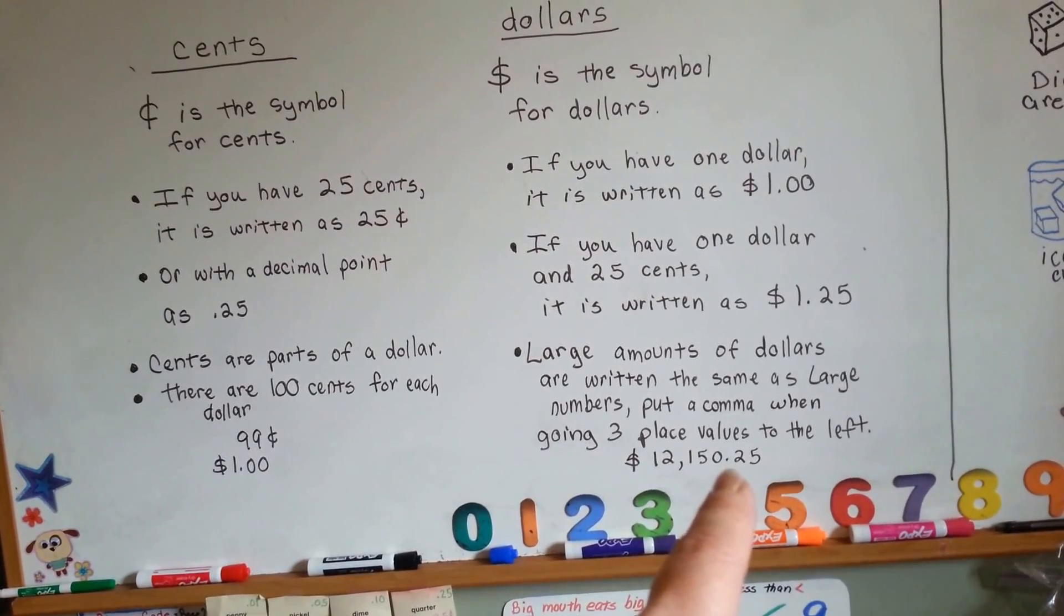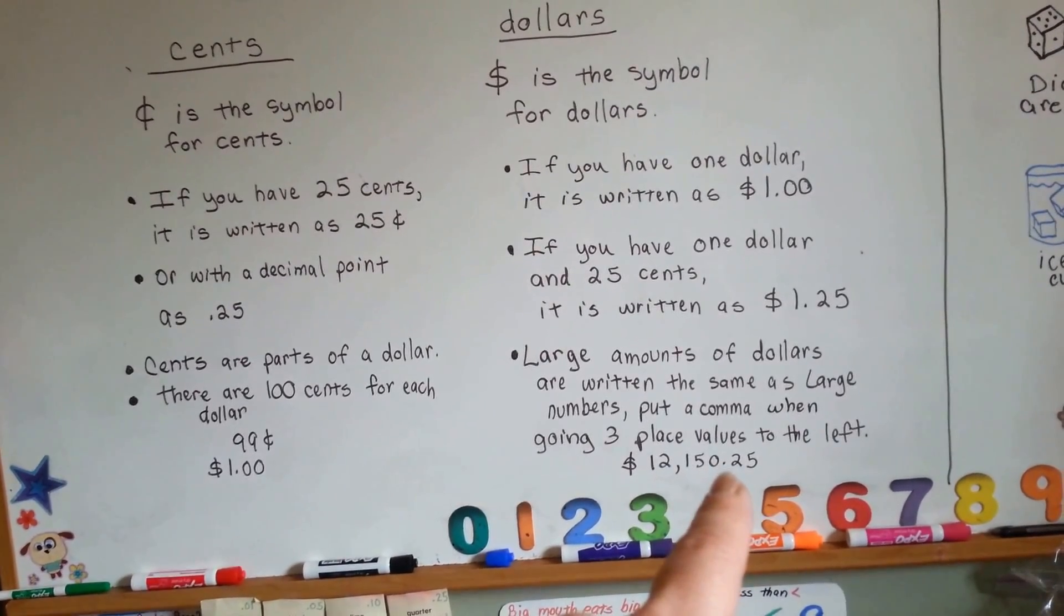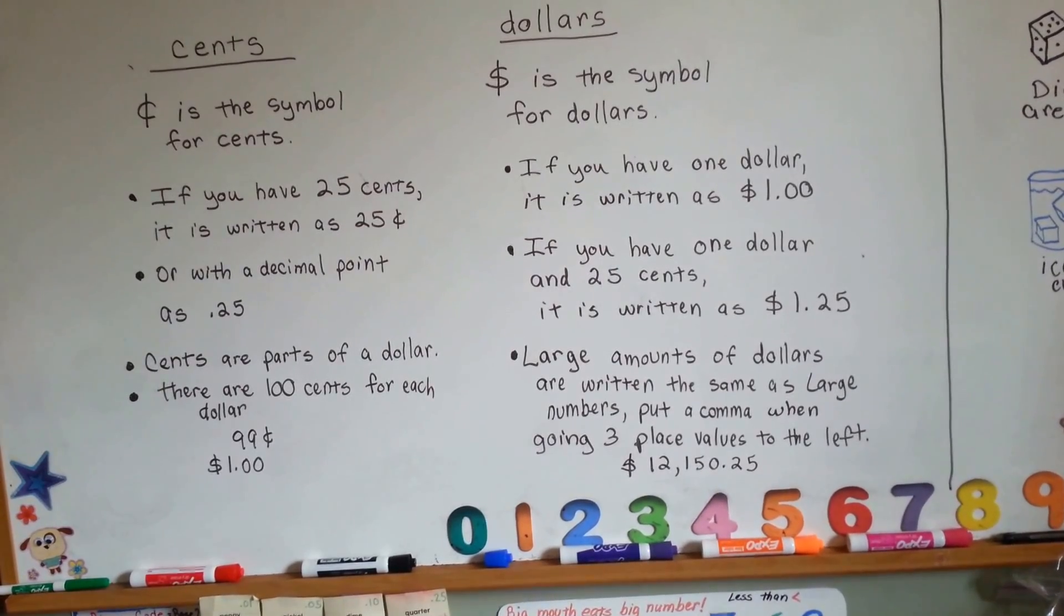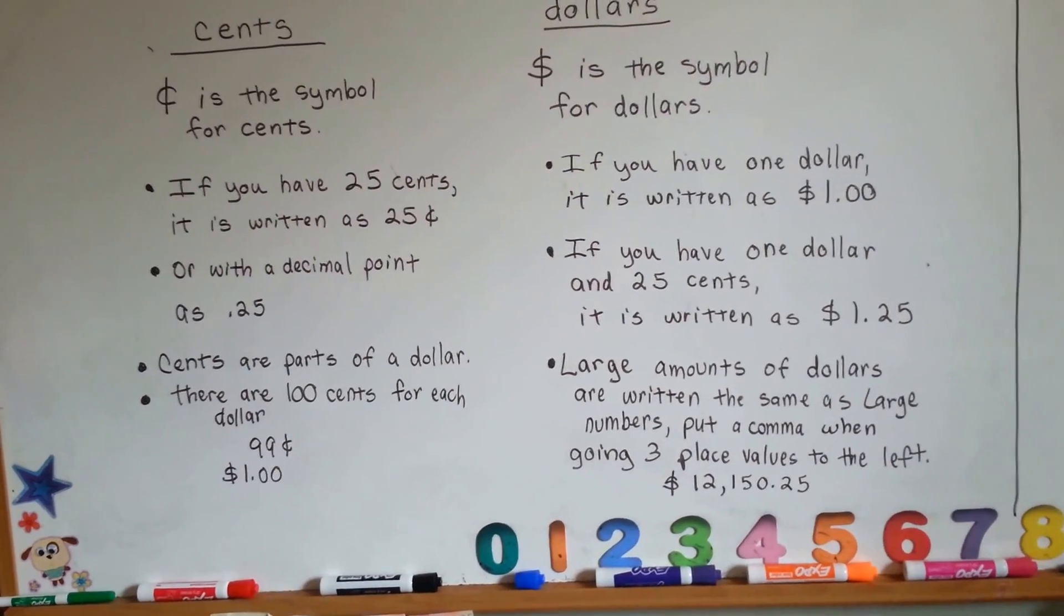The decimal point, you would say 'and,' and you would read this part and say 'dollars,' then say 'and,' and then say the cents. $12,150 and 25 cents.